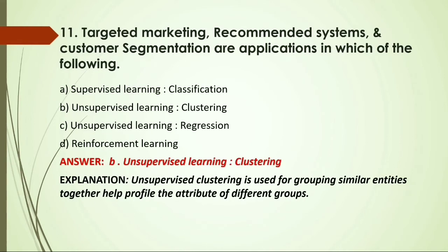MCQ: Targeted marketing, recommendation systems, and customer segmentation are applications in which of the following? Options: A) Supervised learning classification; B) Unsupervised learning clustering; C) Unsupervised learning regression; D) Reinforcement learning. Answer: B, unsupervised learning clustering, because it is used for grouping similar entities together and helps profile the attributes of different groups.